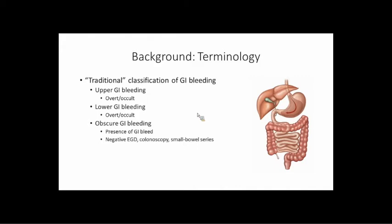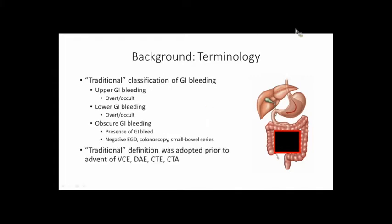Upper GI bleeding is anything above the ligament of Treitz, and lower GI bleeding is everything else. They each come in two flavors: occult — meaning you can't see it — and overt, meaning you see melena or hematochezia. Then there was a category of obscure GI bleeding, which is when you've done your endoscopy, your colonoscopy, and maybe a small bowel series and you can't find a source. The small bowel was this kind of black box that we had no access to.